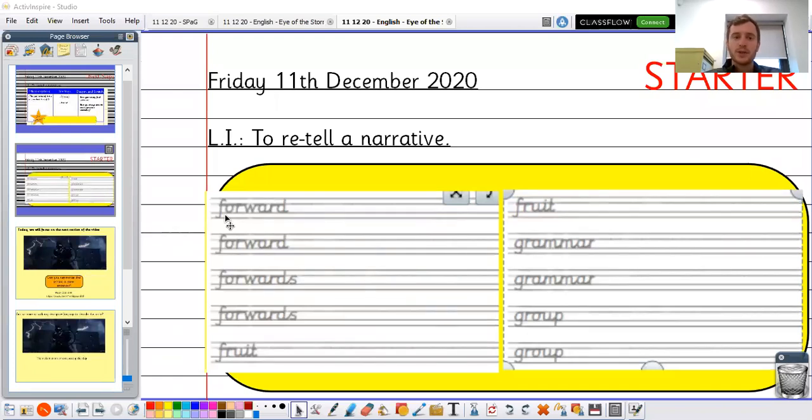As a quick starter activity, I want us to practice some of our handwriting, our letter formation and our joining of letters. As you can see, there are some words on the board for you to practice. The first word being forward. As you can see, I want you to have a go at writing this word, making sure we form each letter correctly, making sure we size each letter correctly, and making sure our ascenders, our tall letters, go up a little bit higher and our descenders, our letters that go down, go a little bit lower.